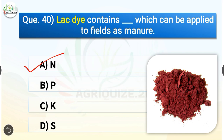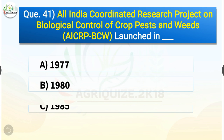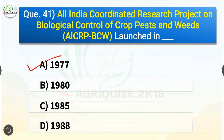Question number forty-one: All India Coordinated Research Project on biological control of crop pests and weeds was launched in dash. The options are 1977, 1980, 1985, or 1988. The correct answer is option A — 1977. All India Coordinated Research Project on biological control of crop pests and weeds was launched in 1977.